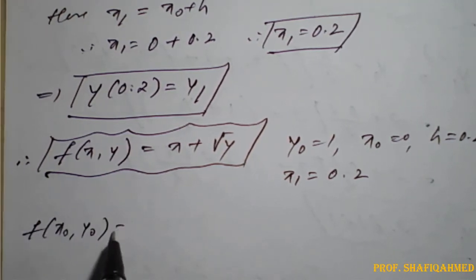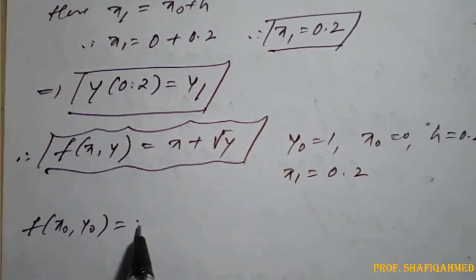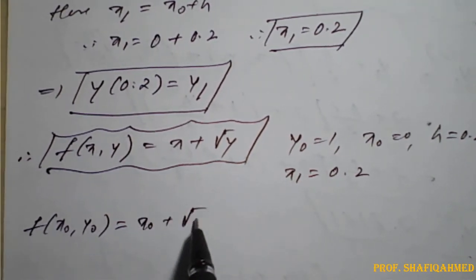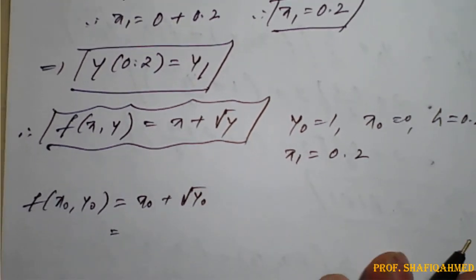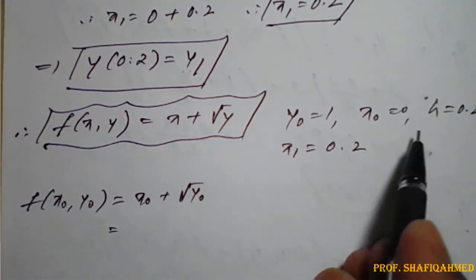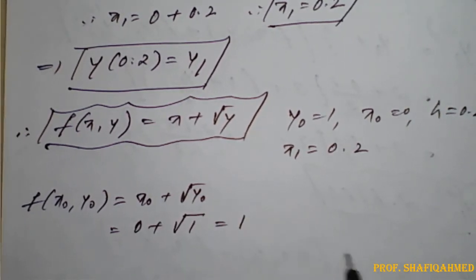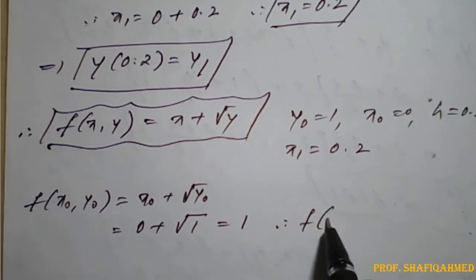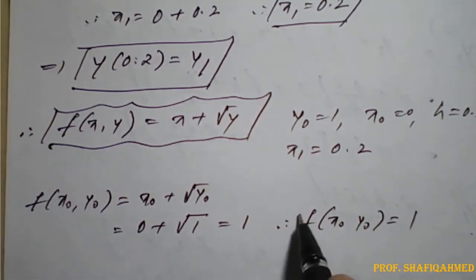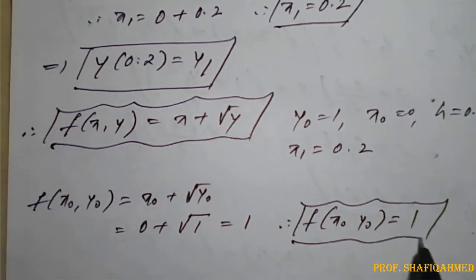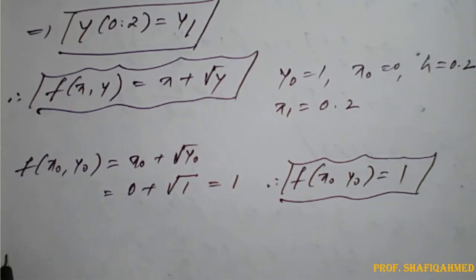First we need to find f(x0, y0). Here x is replaced by x0 and y is replaced by y0. So f(x0, y0) = x0 + √y0 = 0 + √1 = 0 + 1 = 1. Therefore f(x0, y0) = 1.